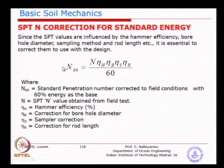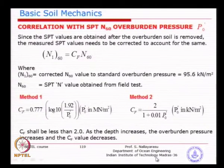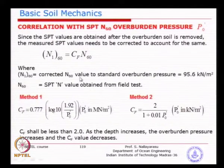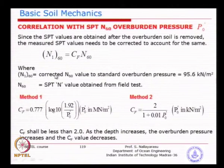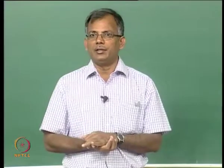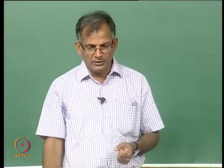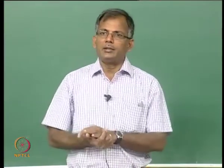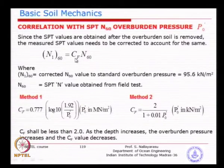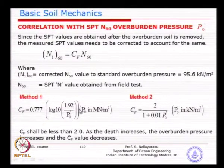The most important correction is the energy efficiency, which you use to convert your measured N value to N60 by multiplying by the energy ratio divided by 60. Once you obtain N60, what is still missing is the correction factor for overburden pressure — the soil that has been removed has not been accounted for. The notation N1(60) takes into account the reduced overburden pressure at the time of testing. After getting the energy correction, you multiply by a correction factor CN for overburden. Several empirical equations are available for this; you must be careful about the units required.